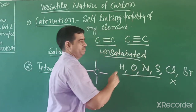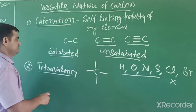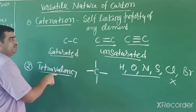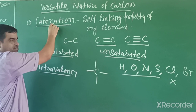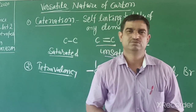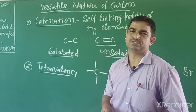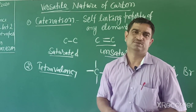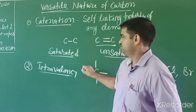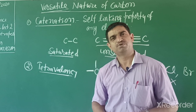So these two natures - catenation and tetravalency - make carbon special. More than 60 million compounds of carbon are found, and due to these two reasons, so many compounds exist. The compounds of carbon are known as organic compounds.